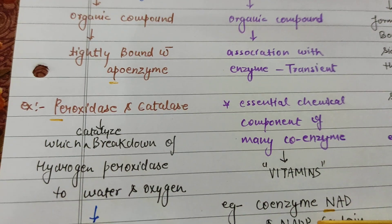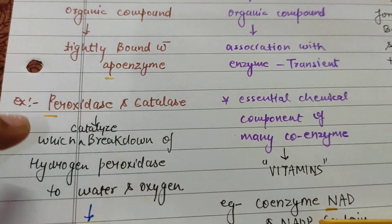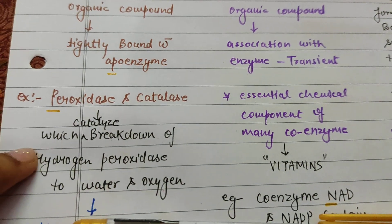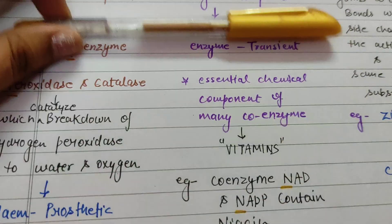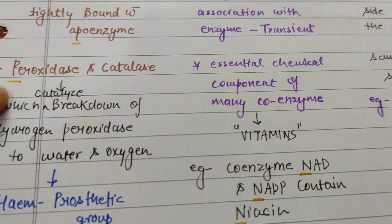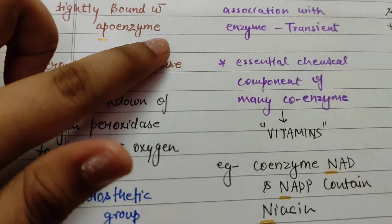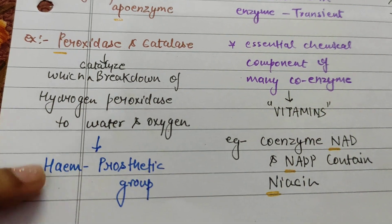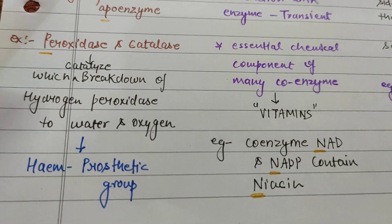This means the Prosthetic group is very tightly bound to the protein part of the enzyme — the Apoenzyme. The examples are Peroxidase and Catalase, which catalyze the breakdown of hydrogen peroxide to water and oxygen. The Prosthetic group in both these enzymes is the heme part.